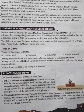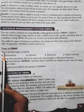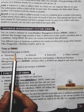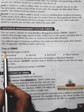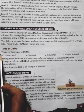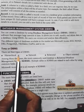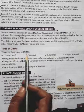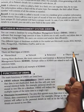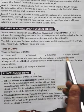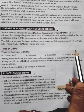Now, what are the types of DBMS? There are four types of DBMS: the first one is hierarchical, then network, relational, and object-oriented.